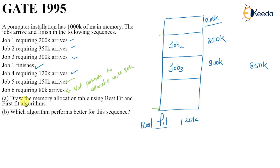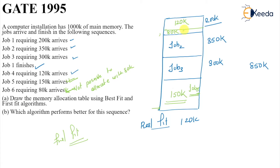Now applying first fit method: job four requires 120k and the first available hole is the freed 200k space, so 120k is allocated leaving 80k. Then job five (150k) is allocated in the 150k space. Then job six (80k) fits exactly in the remaining 80k hole. All jobs are satisfied with first fit — first fit works better.